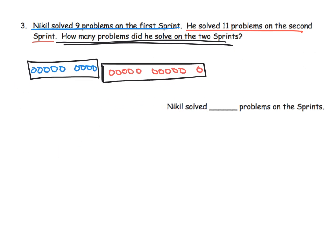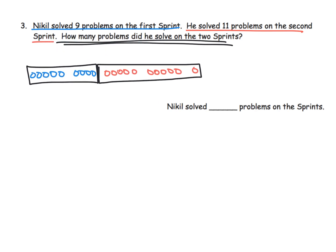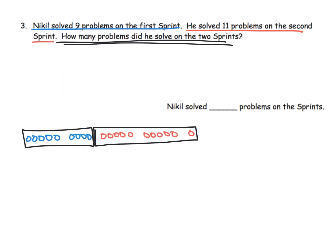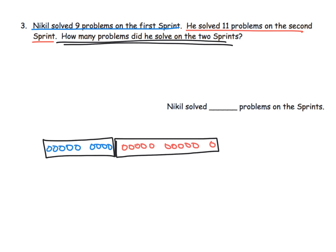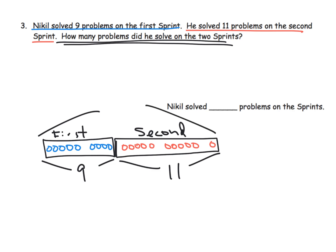We've got the first sprint and the second sprint, and it asks how many problems did he solve on the two sprints together — so we're going to put them together. We can label the first section 'first' with nine, and the second section 'second' with 11, and then ask what's the total — with a question mark. This is one way to show the model, and of course this is the classic model to show addition.